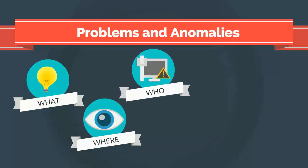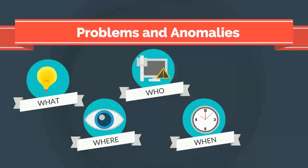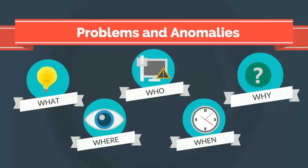The Who identifies the transactions that are affected or might be impacted. This aspect also determines how many transactions are affected. The When records an event occurrence, typically the start and end of a stall event, an error event, or an instability. The Why explains an event occurrence.